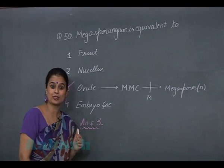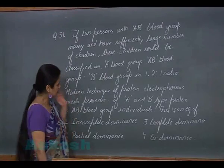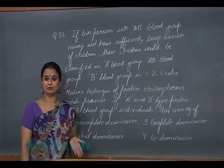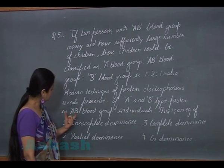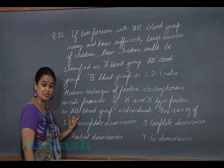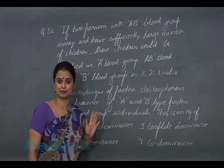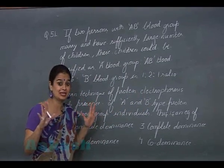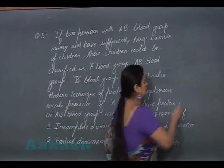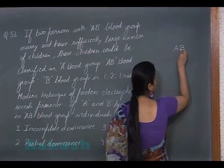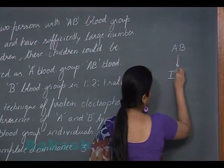Now let's discuss question number 51. This is an example of the ABO blood group. An individual having the AB blood group possesses both A-type and B-type proteins. We have to discuss what type of inheritance this is.